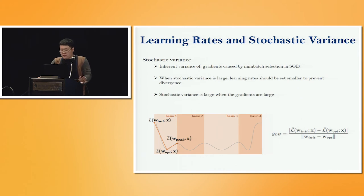In full-batch gradient descent, learning rate is only affected by the curvature of the loss surfaces. However, in stochastic gradient descent, stochastic variance is further induced because of the mini-batch selection. This inherent variance of gradients caused by mini-batch selection interferes with convergence, and learning rate should be set smaller to prevent divergence.